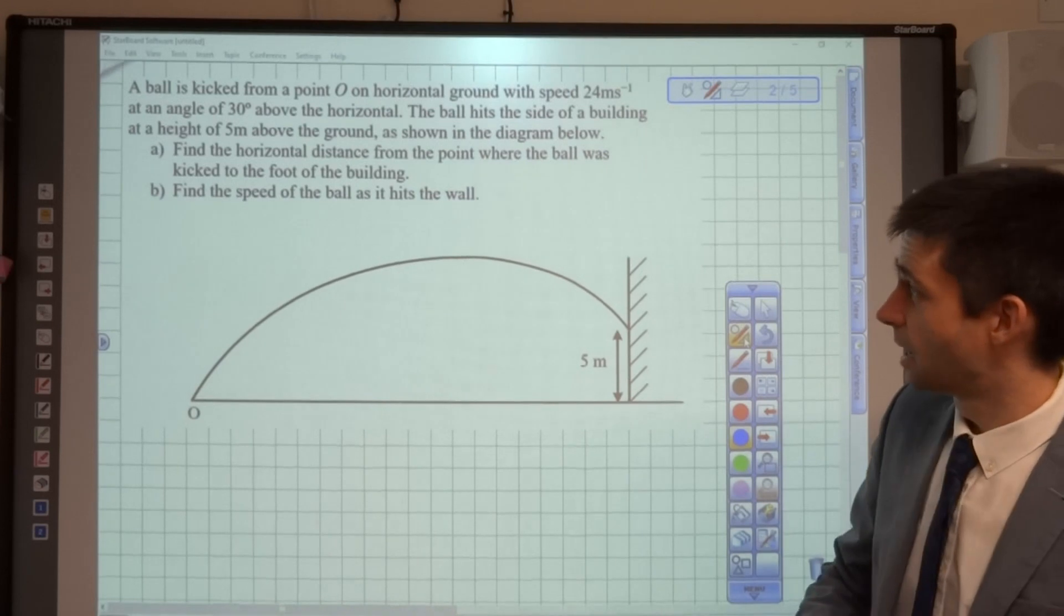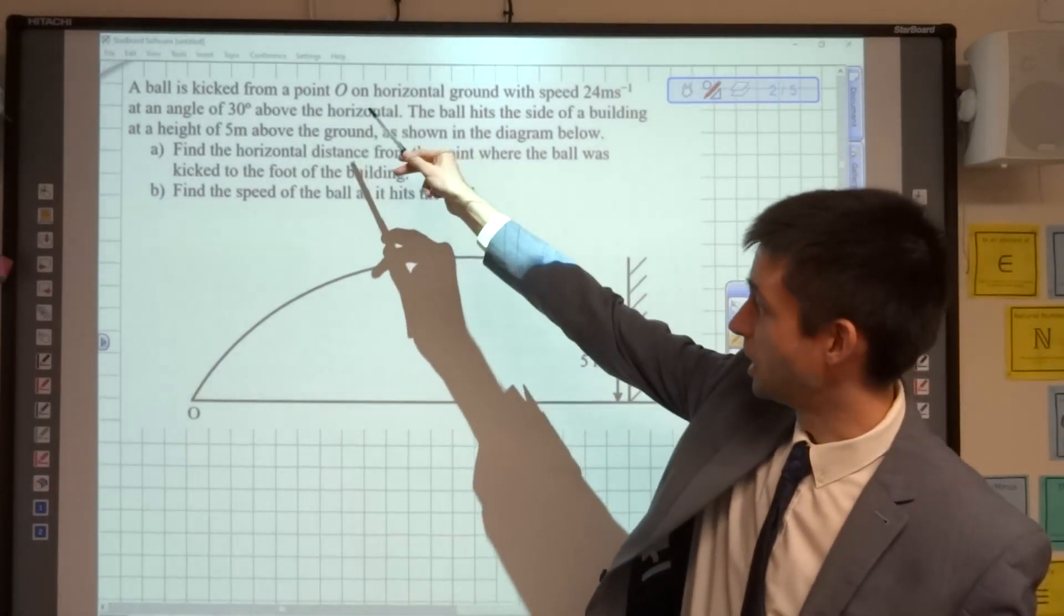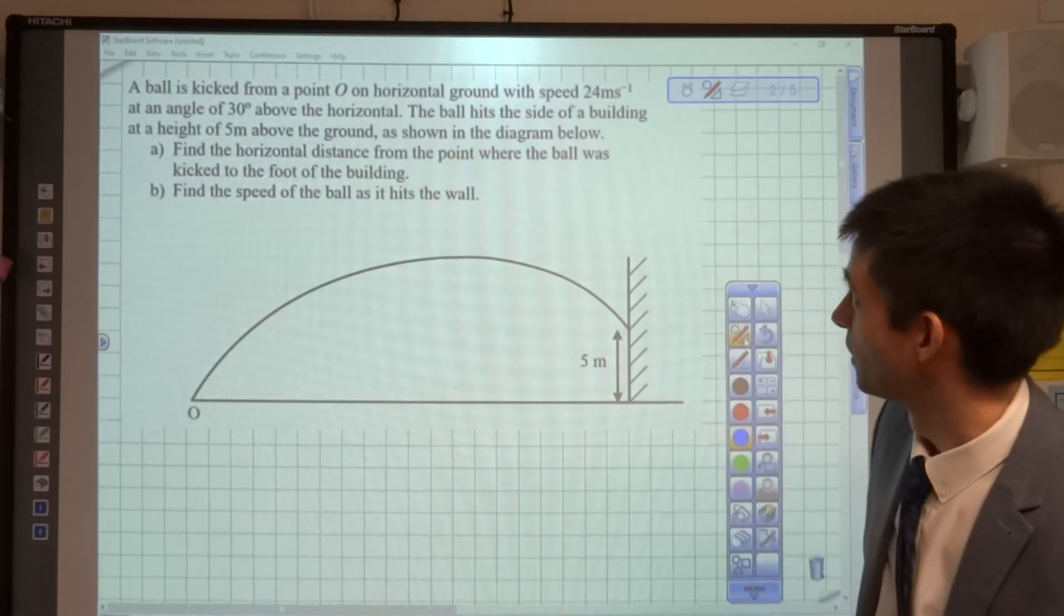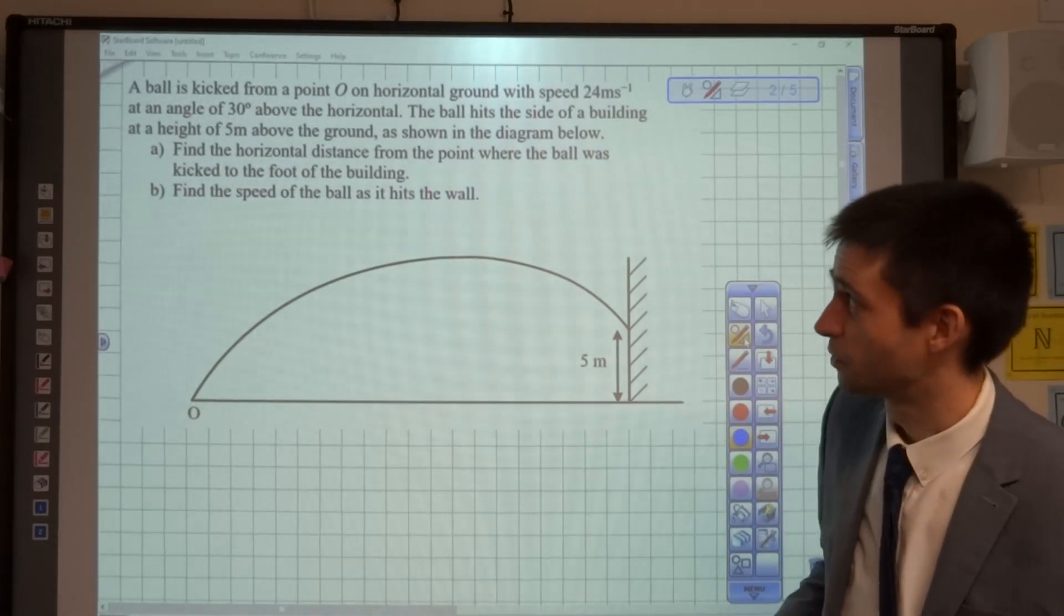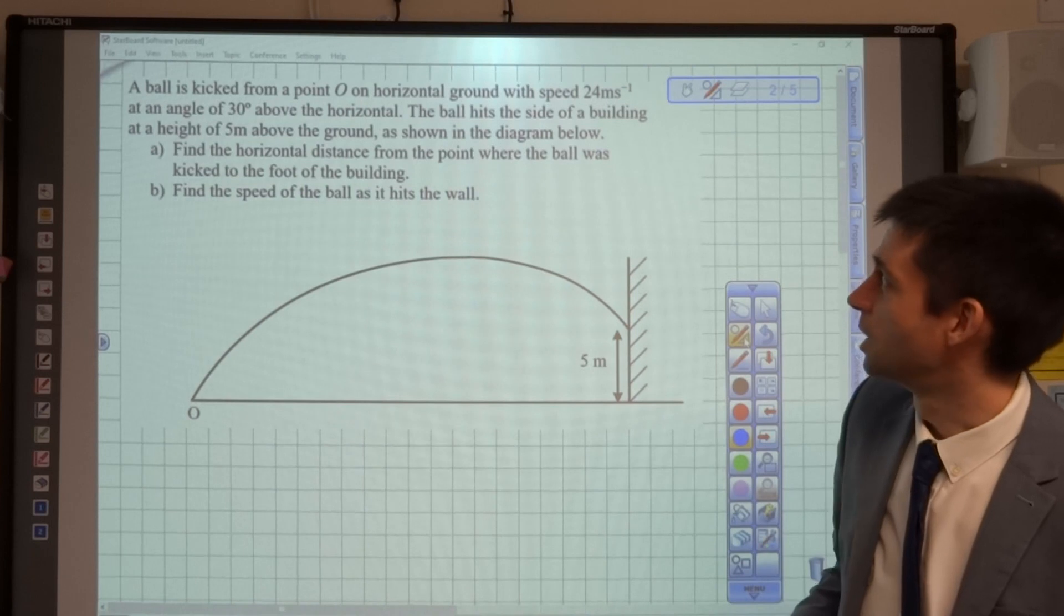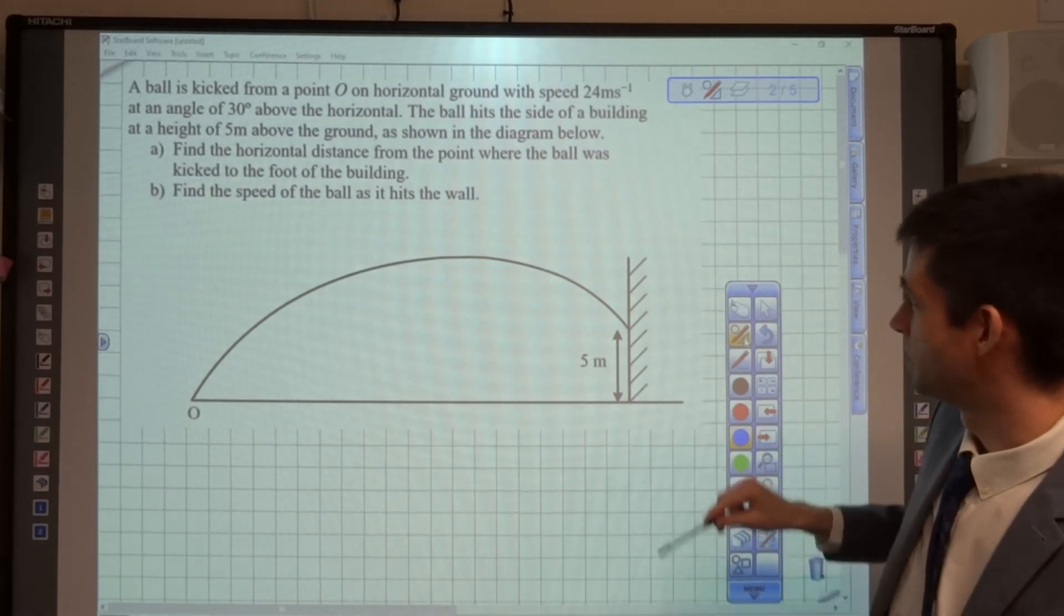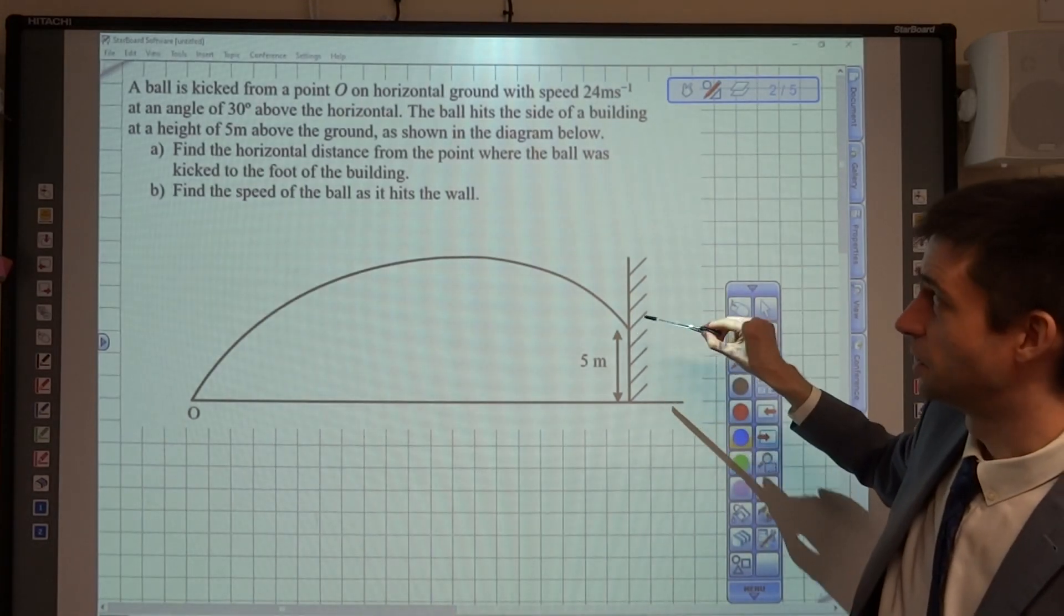Here we have a ball kicked from a point O on horizontal ground with speed 24 metres per second at an angle of 30 degrees above the horizontal. The ball hits the side of a building at a height of 5 metres above the ground, as shown in the diagram below.